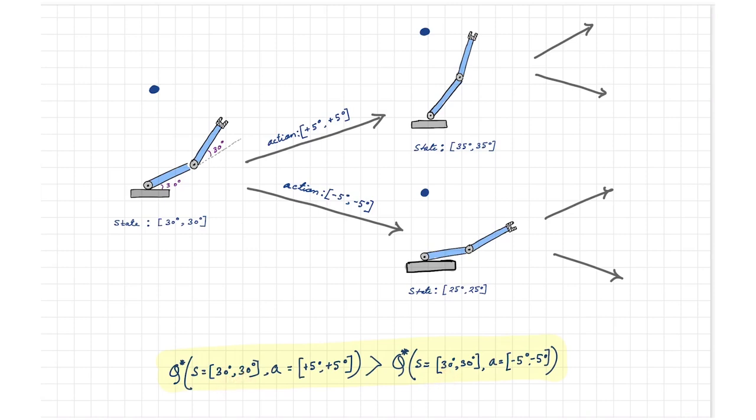Q-learning attempts to figure out or estimate these values for all the possible actions for all the possible states, so that the robot can decide optimally which action is the best to take at any state depending upon the goal. Once the Q values are estimated, the arm can simply follow the action at any state that has the highest Q value.